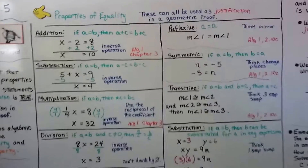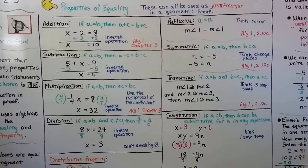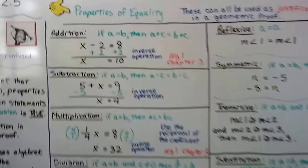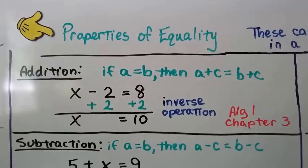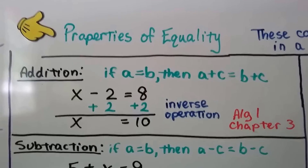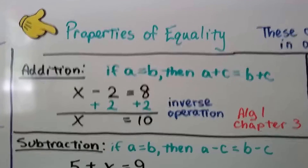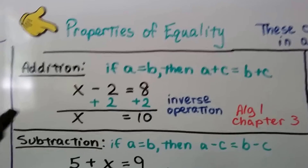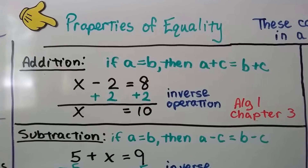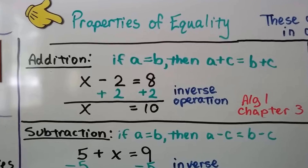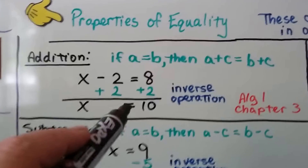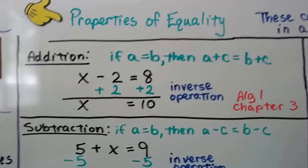We have these properties of equality, and these can be used as justification in a geometric proof. The addition property of equality says if A equals B, then A plus C equals B plus C. We'd use it to solve for X in a situation like X minus 2 equals 8 — we just add 2 to each side, the negative 2 and positive 2 cancel as a zero pair, leaving X equals 10.